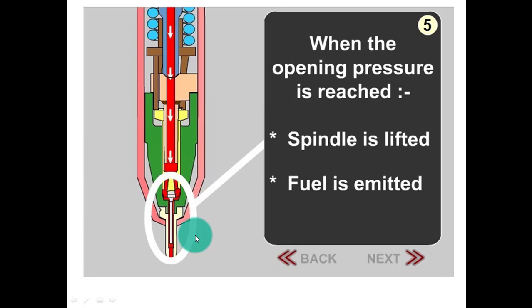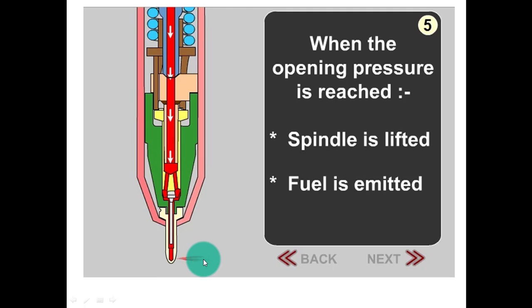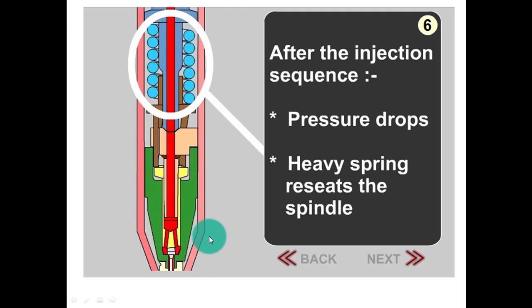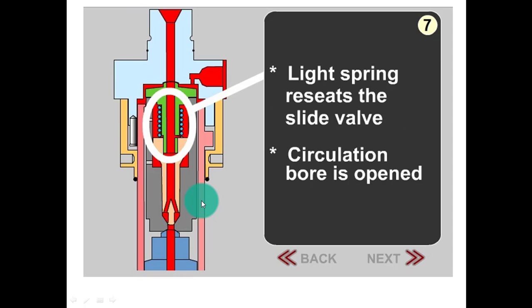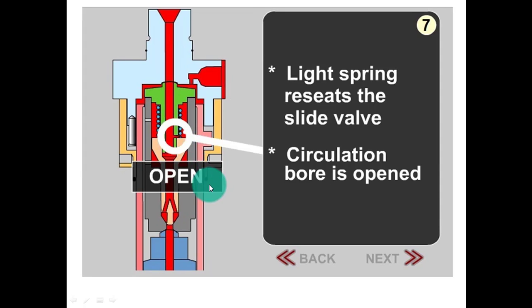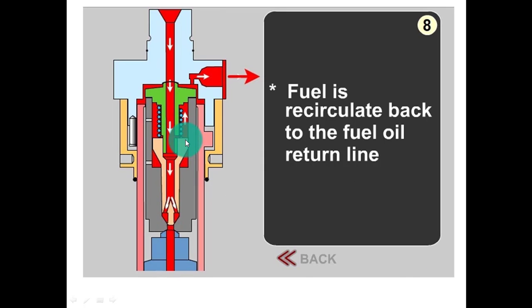You can see the emission of fuel. After the injection sequence, pressure drops. Heavy spring resets the spindle. Light spring resets the slide valve. Circulation bore is again opened, fuel is recirculated back to the fuel oil return line.